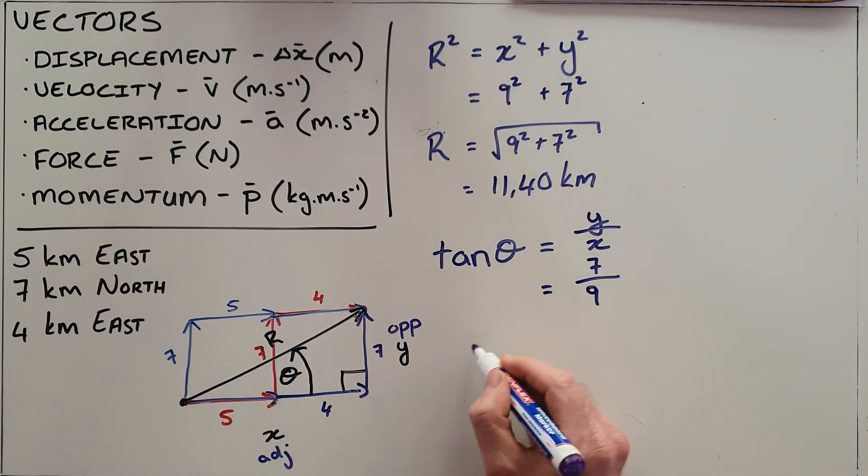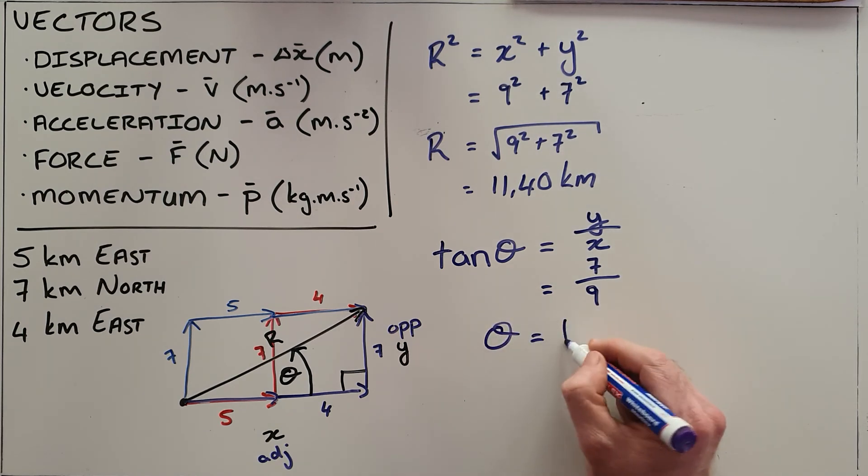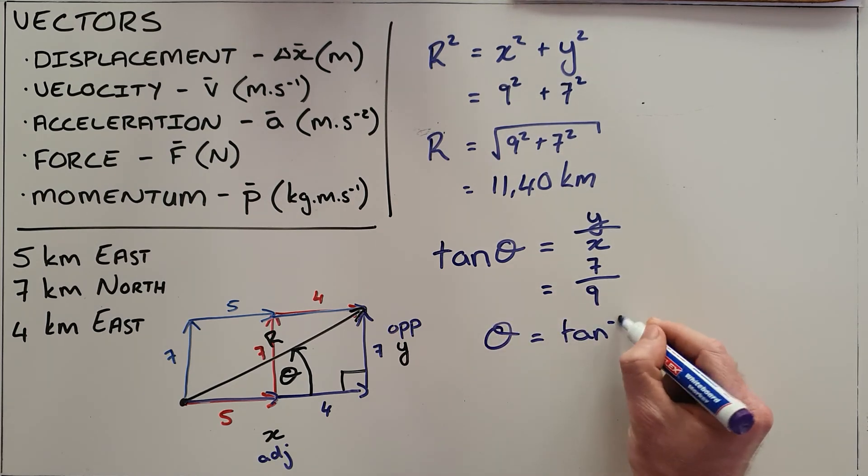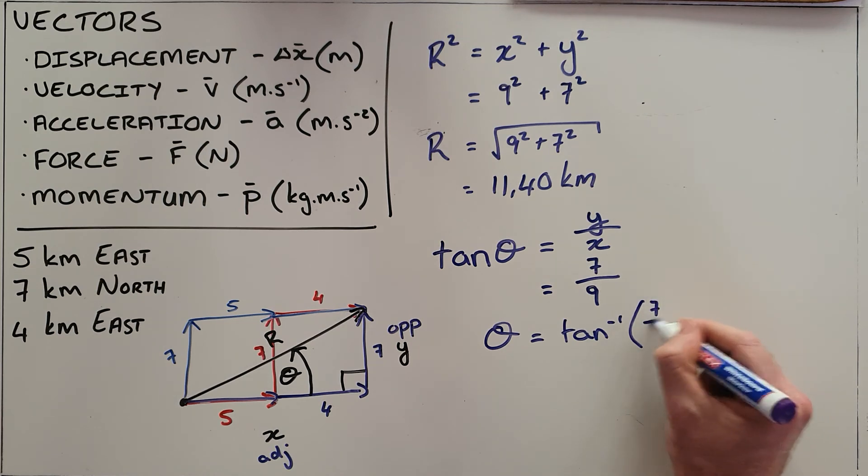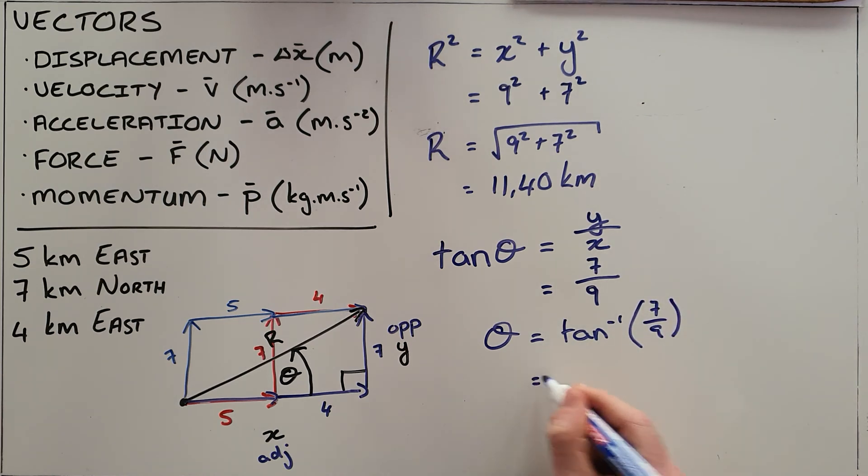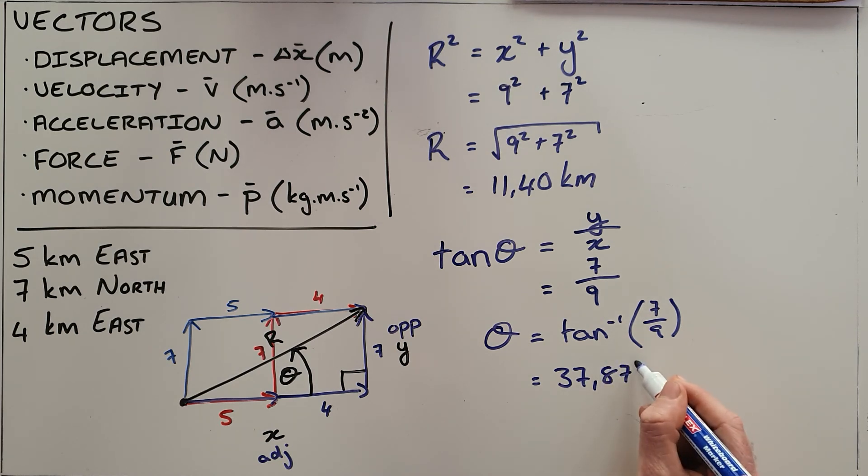And we can then use our second function on the calculator to find that that angle theta is equal to 37.87 degrees.